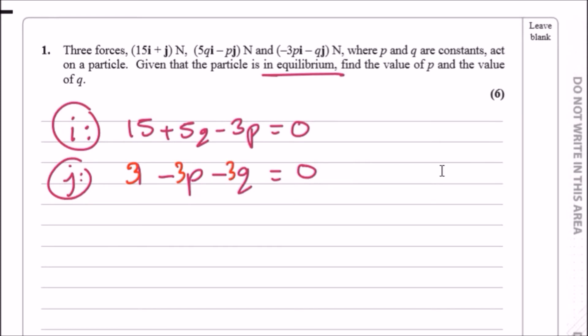Now I've got -3p and -3p, so I could subtract these completely. We've got 15 take away 3, we should get 12. Now 5q minus -3q gives us +8q, and -3p take away -3p is nothing, and 0 take away 0 is 0.